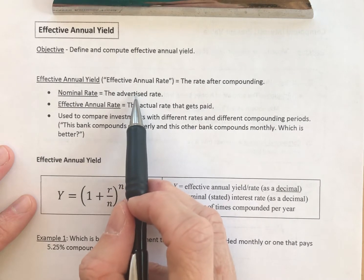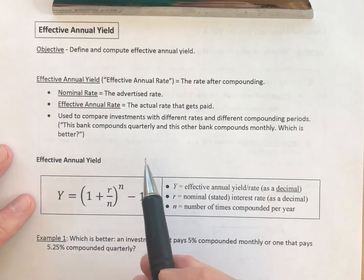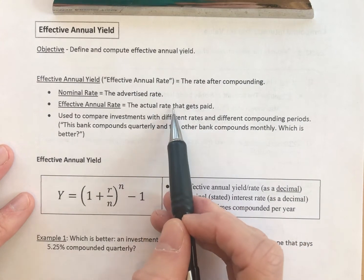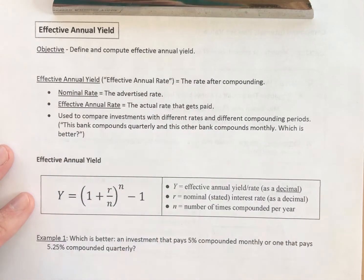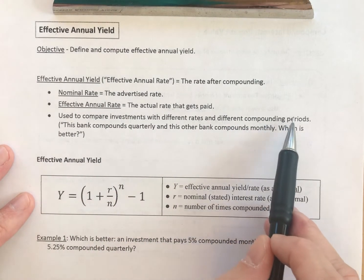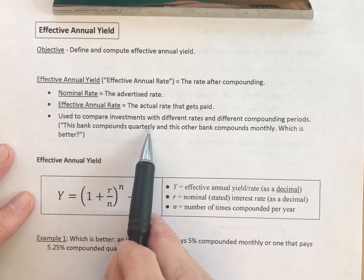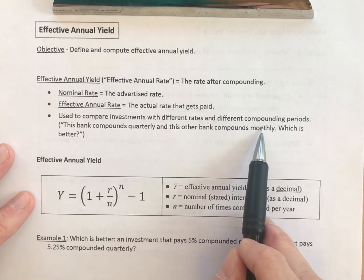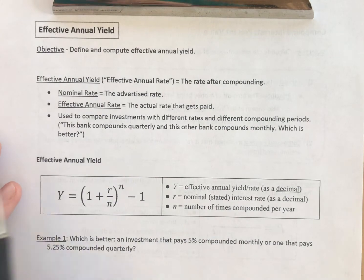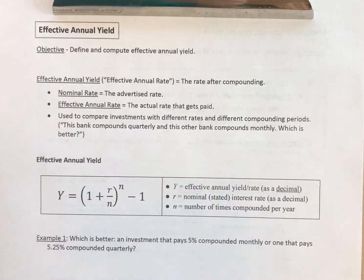So they say our rate is 7%, we compound monthly. After a year, what's the actual rate that you paid? It is used to compare investments with different rates and different compounding periods. In other words, this bank compounds quarterly, this other bank compounds monthly, their rates are slightly different - which is better? Because they're compounding differently, they may have slightly different rates, which is better?